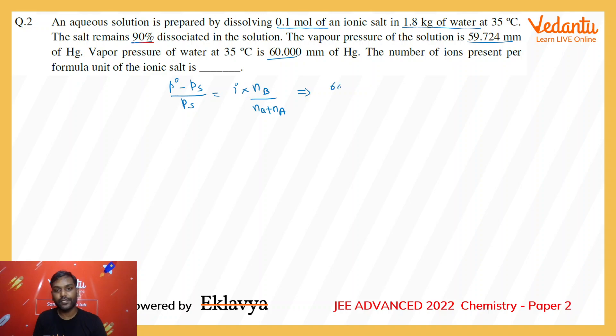The moles of salt is 0.1, plus the weight of water is 1800 divided by its molecular weight, which is 18. In the denominator you have 0.1 plus 100, so this can be written approximately as i times 0.1 divided by 100.